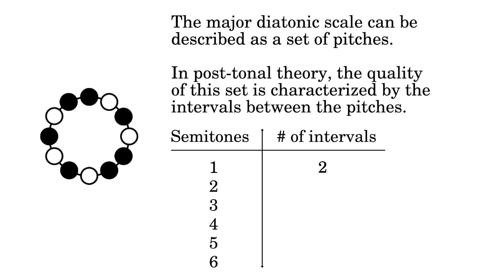Counting the intervals that are a distance of two semitones, we see there are five of them, here, here, here, here, and here. Of intervals with three semitones, or a minor third, there are four, here, here, here, and here.